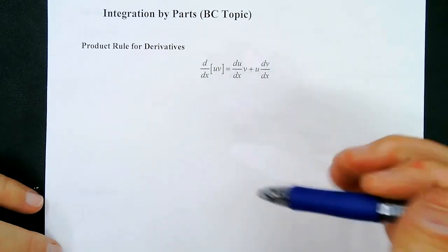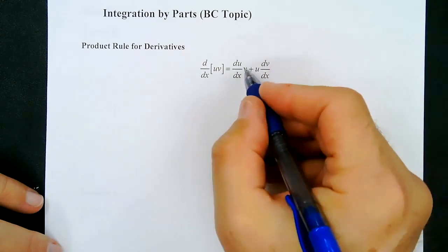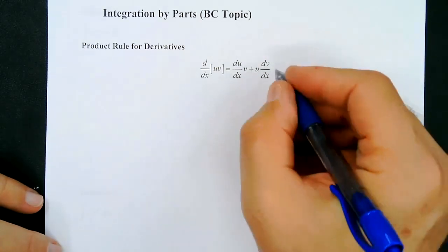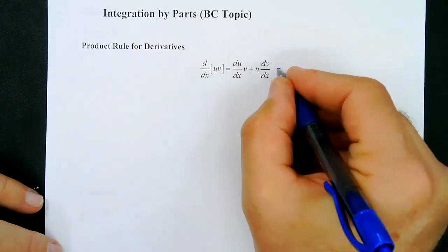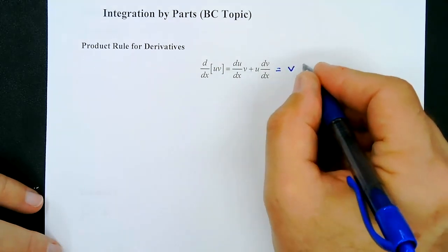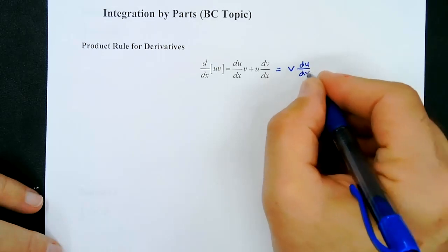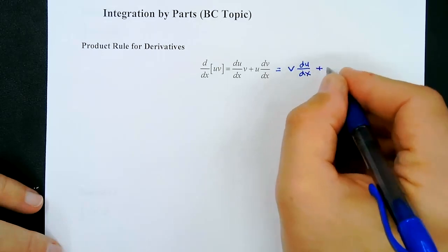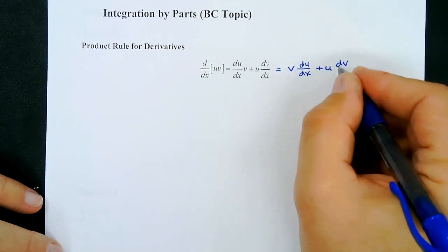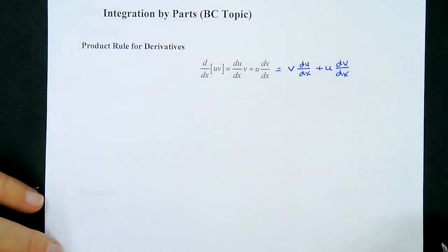I'm going to rewrite this a little bit. I'm going to switch spots with the v and the du/dx, so it becomes v times du/dx plus u times dv/dx.